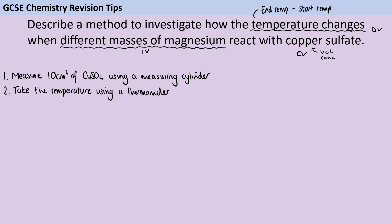Then I need to take the temperature of that using my thermometer. Now, if you've missed out that step, you could still get valid data provided your range of masses of magnesium is big enough. So if we're looking at 0.2 grams of magnesium and 1 gram of magnesium, it's unlikely that the starting temperature is going to have moved enough to hide the difference in the final temperatures. But to get the best valid data, we do want to be working from the starting point — measuring how much the temperature has changed.